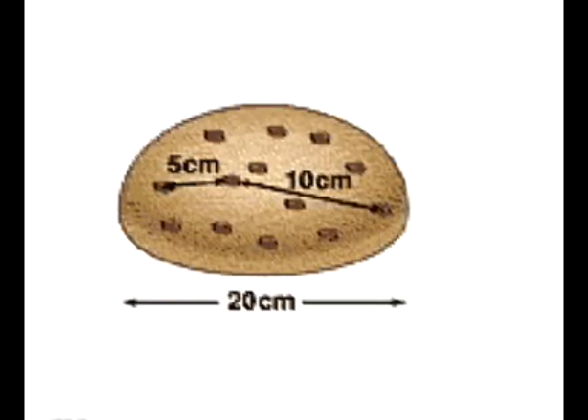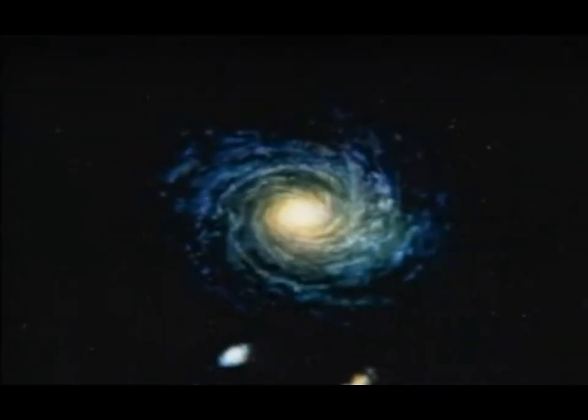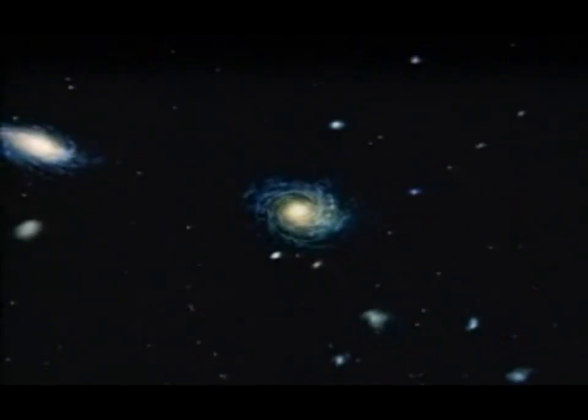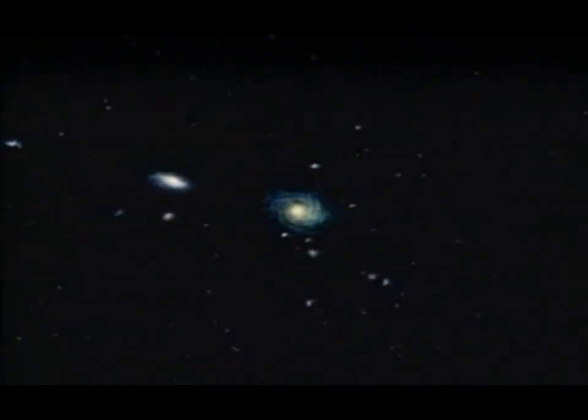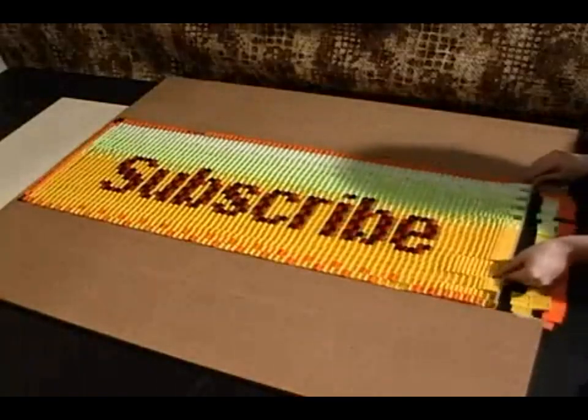Let's say that the size of the loaf doubles. The distance between all of the raisins will double, and the more distant raisins will appear to have moved faster. That is just what Hubble found - the farther away a galaxy, the farther it was moving away from us.